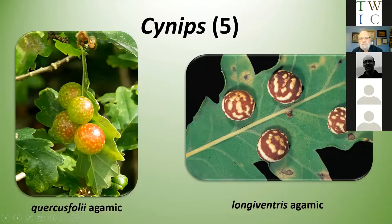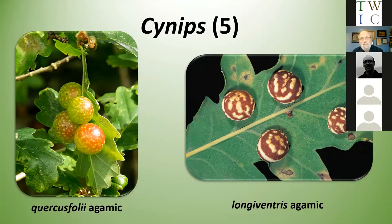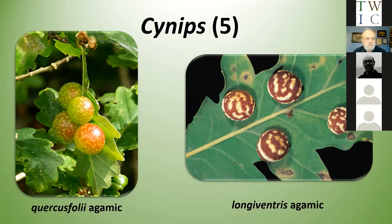Another genus with just five species in this country: Synaps. The one on the left — Synaps quercusfolii — is quite common and widespread, known for obvious reasons as Cherry Galls. These remain on the leaves when they fall in autumn, so you often come across them on an autumn walk kicking leaves up. In both these species the sexual generation is found on bud galls of oak trees.